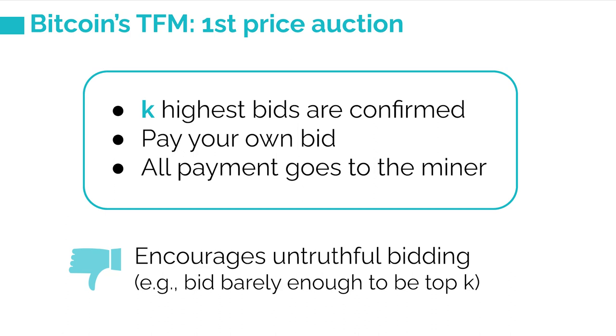Today Bitcoin's transaction uses a simple first price auction. Essentially, suppose your block has size K, then you just take the K highest bids, confirm them in the block, and everyone pays their own bid. All the payment goes to the miner who mines the block. So essentially whenever you mine a new block, this auction will be run. And as we know from classical mechanism design, first price auctions aren't awesome auctions.